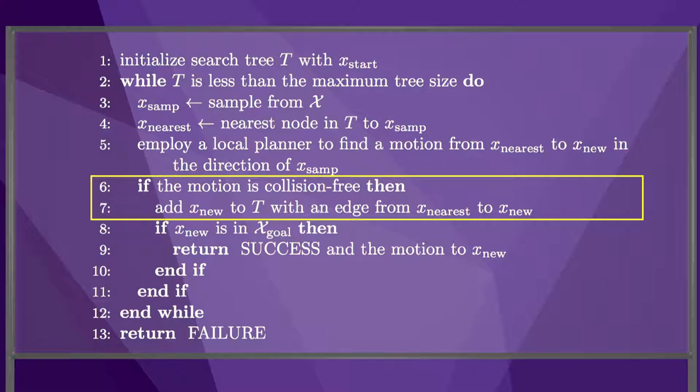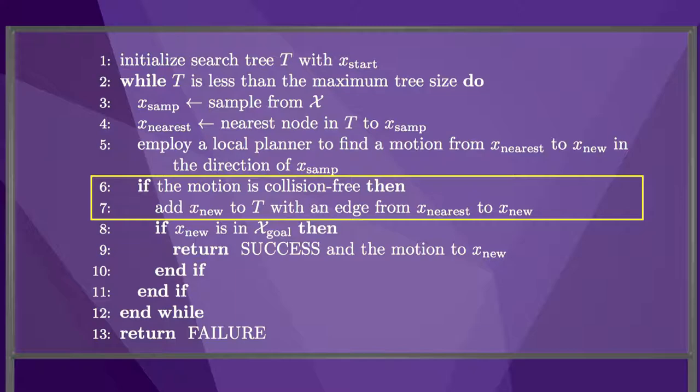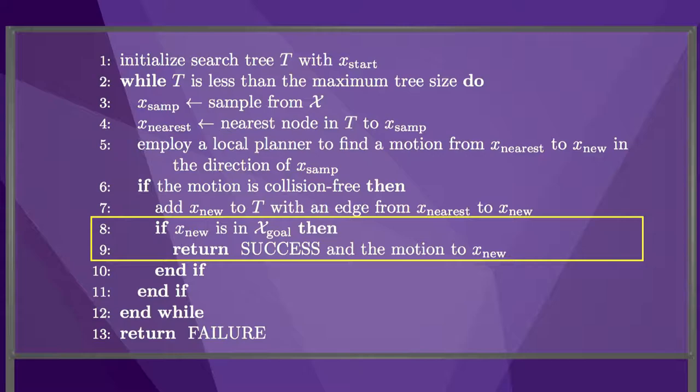In lines 6 and 7, a new edge is added to the tree if the motion from line 5 is collision-free. Finally, in lines 8 and 9, we check to see if the new node is in the goal region, and if so, the planner has succeeded. The plan is reconstructed by following the sequence of parent nodes backward from the node in the goal region.